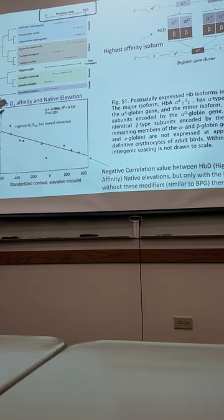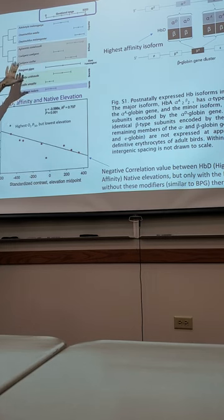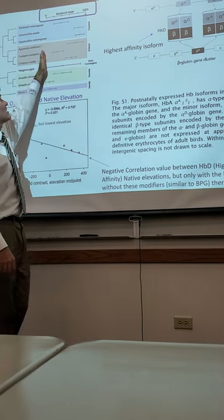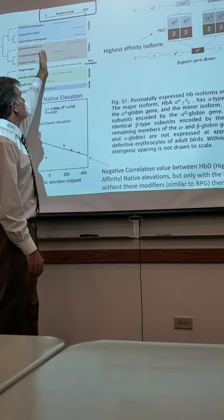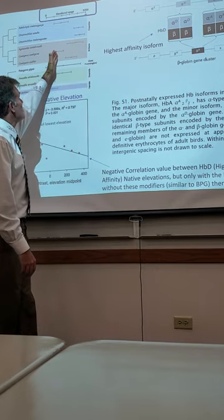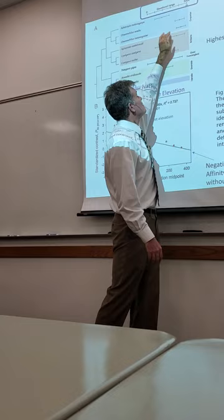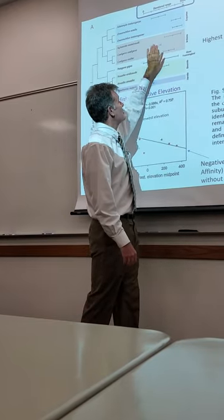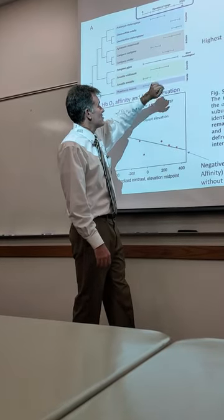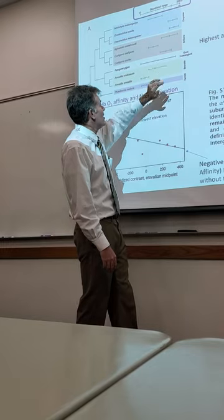This phylogenetic tree is what they're using to try to gain some insight into what's going on here. They also plotted against the elevation range, from sea level all the way up to 5,000 meters. Notice we have some that live at high altitude and some that live at lower altitude. The giant hummingbird just doesn't seem to make up its mind.